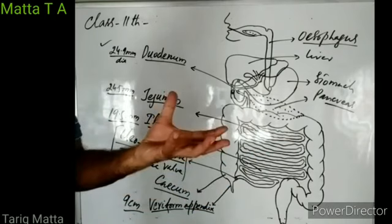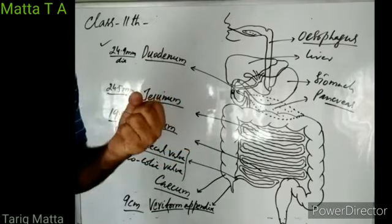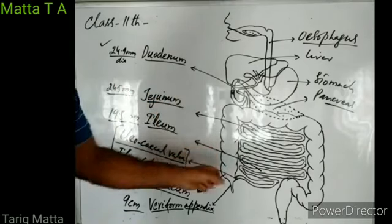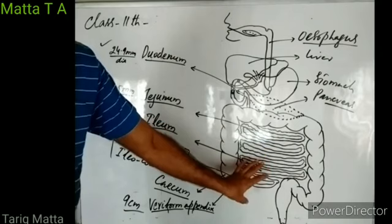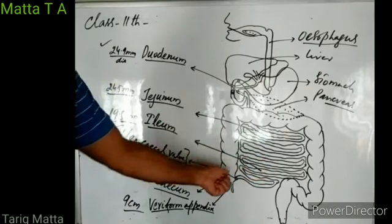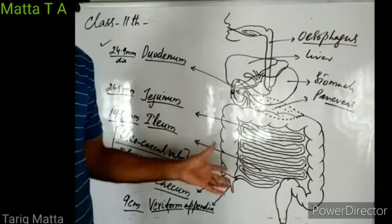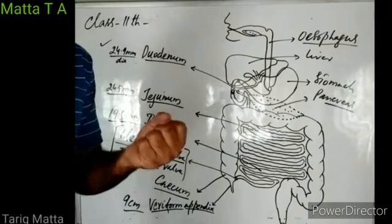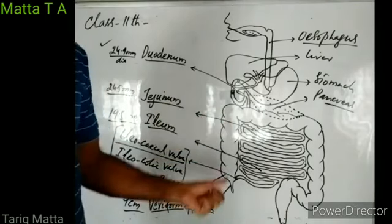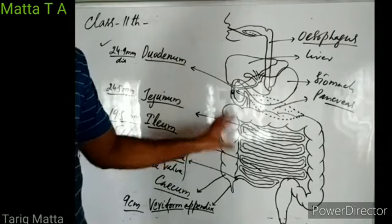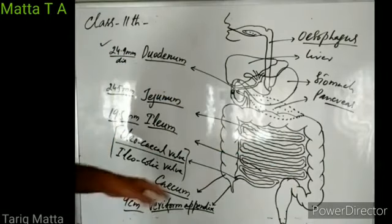The cecum is a small pouch-like structure mostly concerned with reabsorption of water and salts from undigested food materials. Its wall is internally lined by mucosa, which releases mucus to lubricate the undigested food material, helping its movement through the colon.